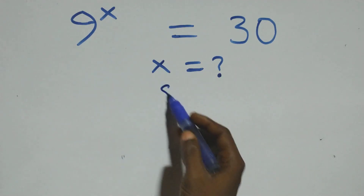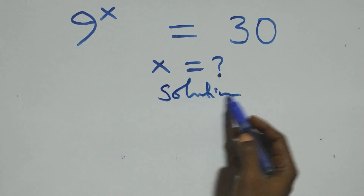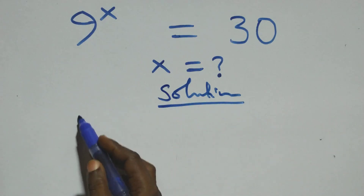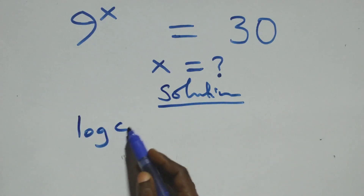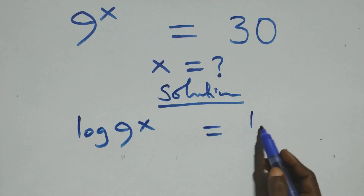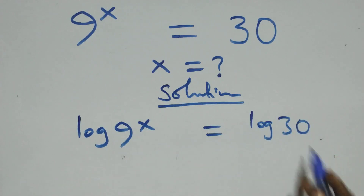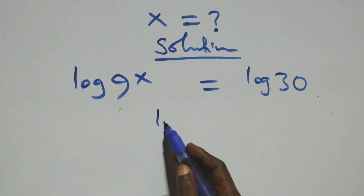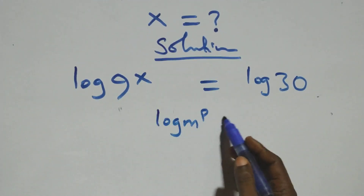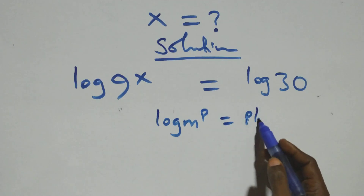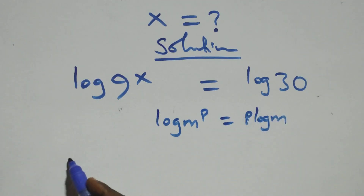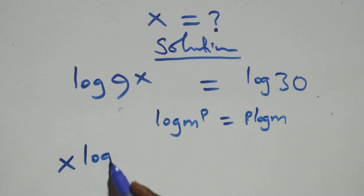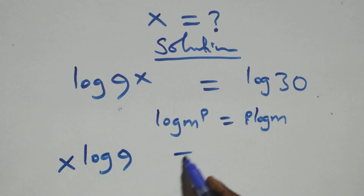Hello, you're welcome. Let's solve this nice exponential equation. We take the log on both sides, so we have log of 9 raised to power x equals log of 30. Here we apply the power rule of logarithms: log n raised to power p is the same as p log n. So this becomes x log 9 equals log 30.